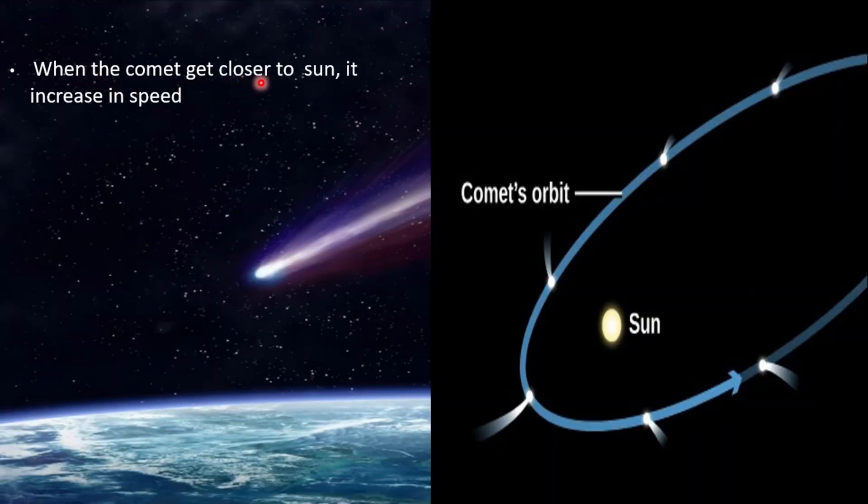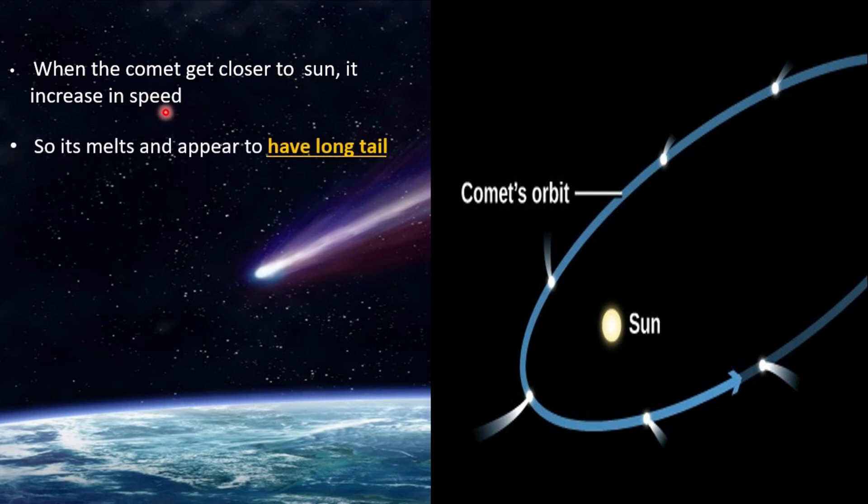When the comet gets closer to Sun, it increases in speed. Why? As we know, comet made up from the gas, ice, and frozen dust. So, it melts and appears to have a long tail like this.